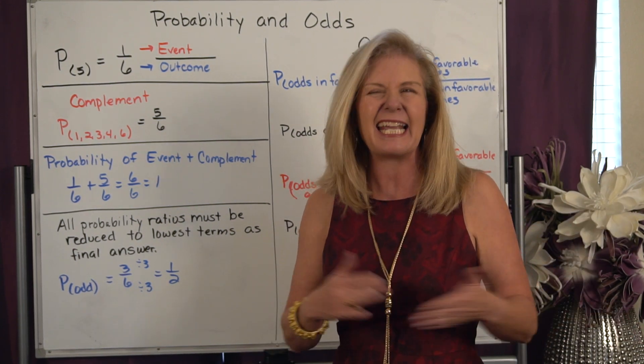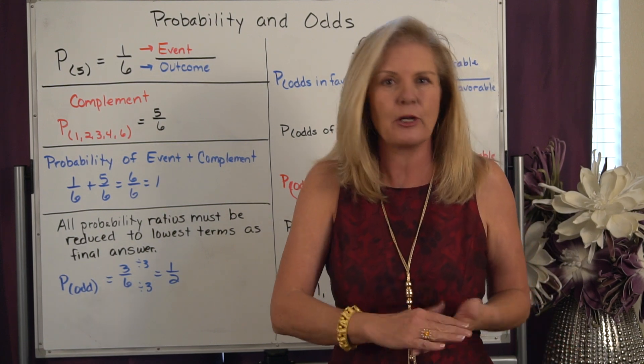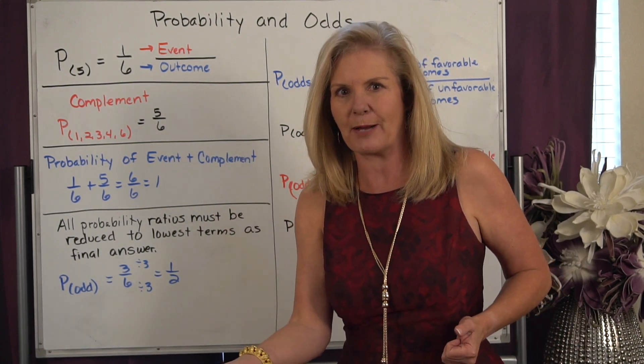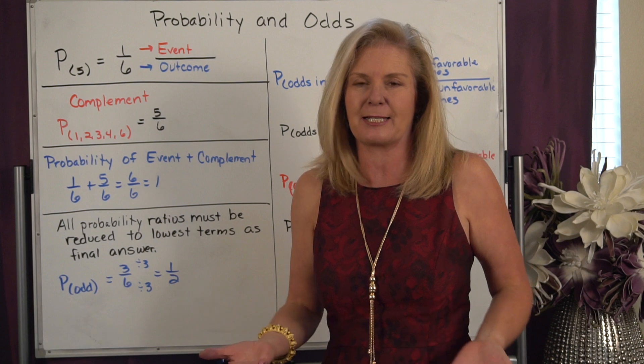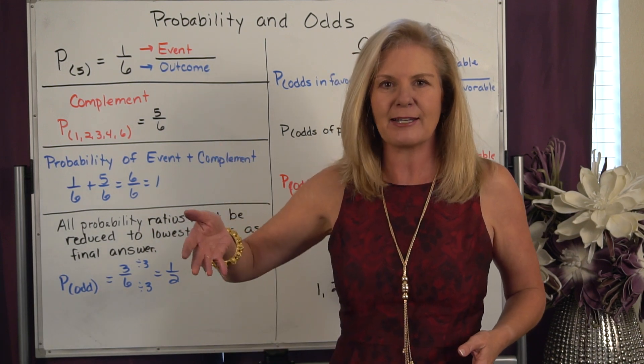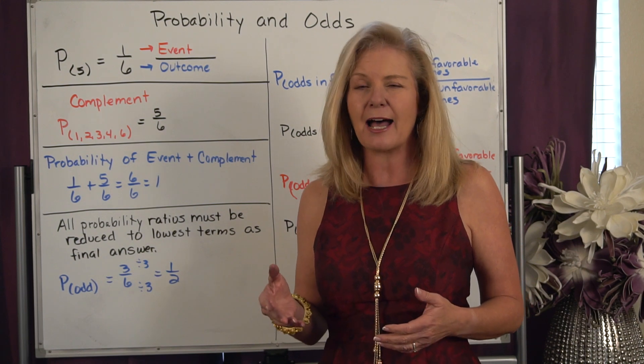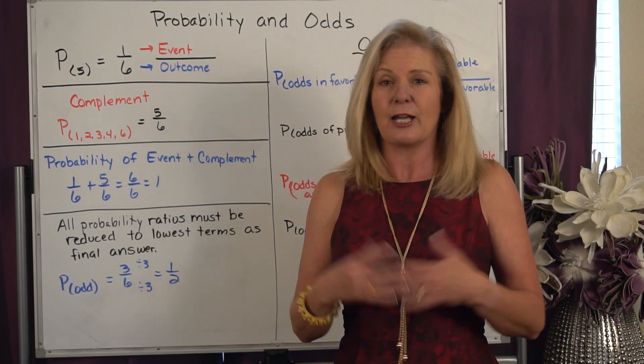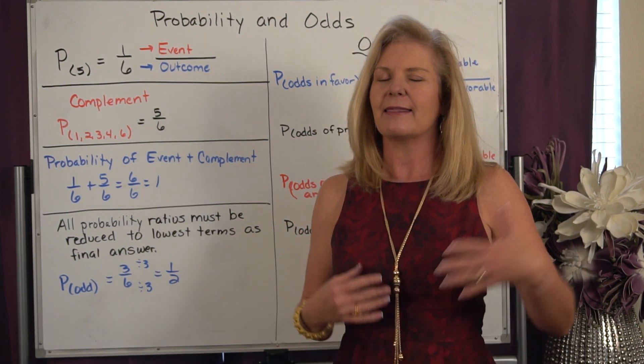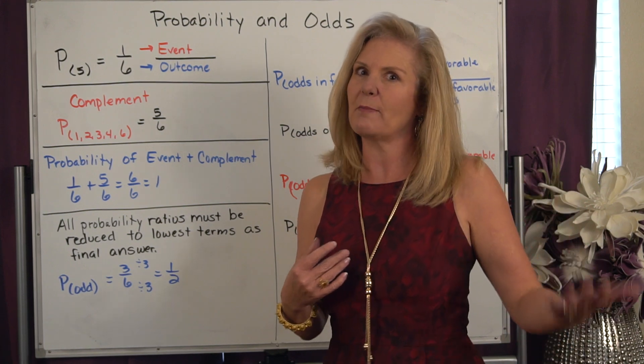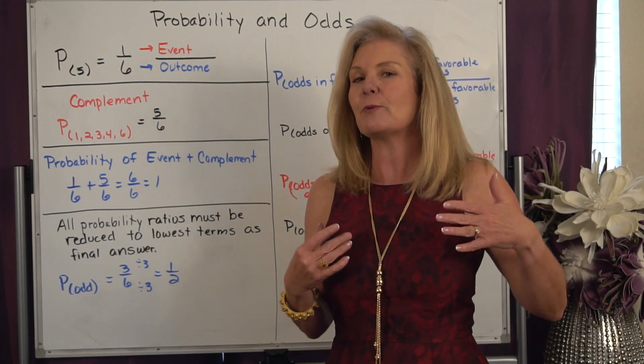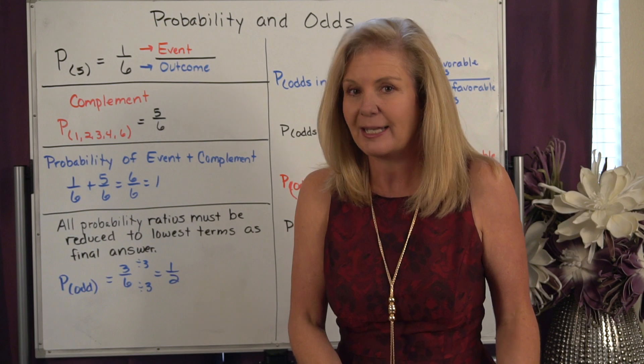There's theoretical probability - in theory what would happen - or there's experimental probability where we actually do the experiment. The experimental we've done before in the past, that's like when you're rolling die or you're flipping coins and we're seeing what actually happens. Theoretical, that's more the mathematical part. In theory, what do we predict would happen? It doesn't mean it necessarily happens, it's just our mathematical prediction.